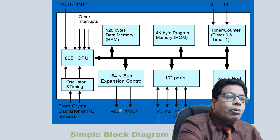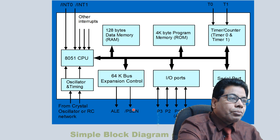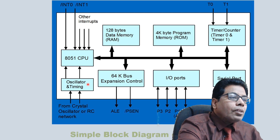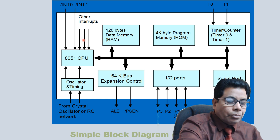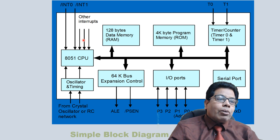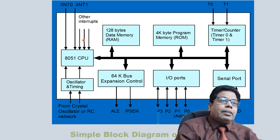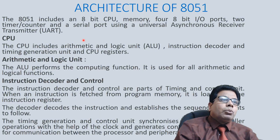There is a 64K bus expansion control with control signals ALE and PSCN for bus control. An on-chip oscillator and timing circuit generates the clock. Interrupts INT0 and INT1, along with three internal interrupts, are also shown. This is the simple block diagram of 8051.